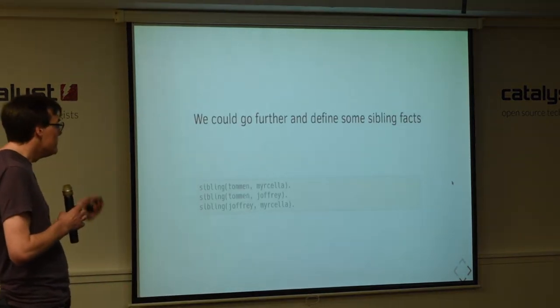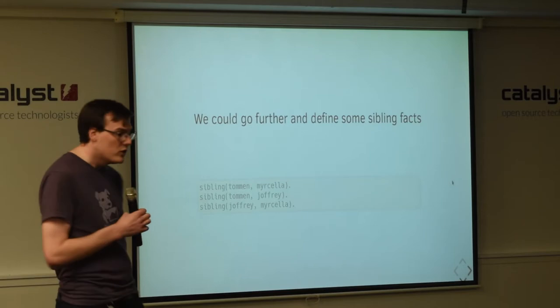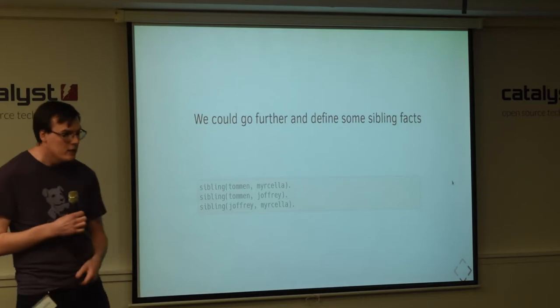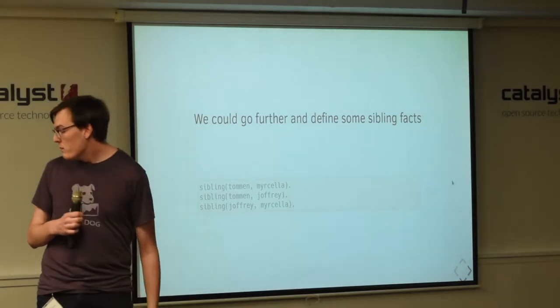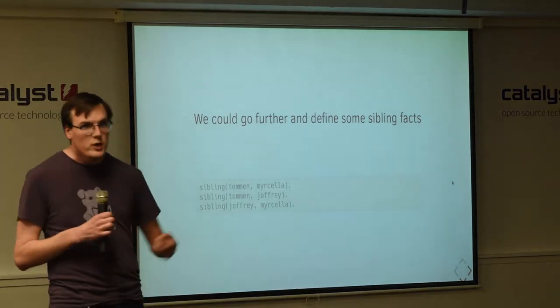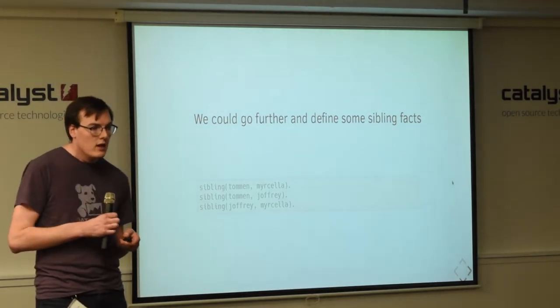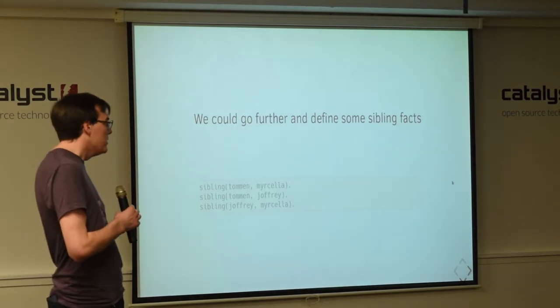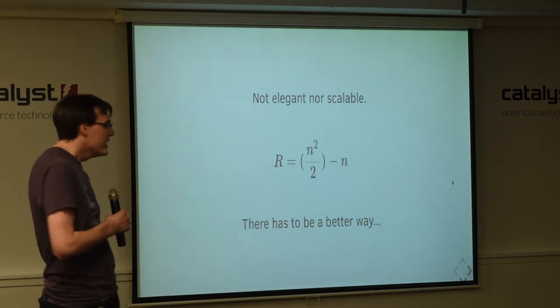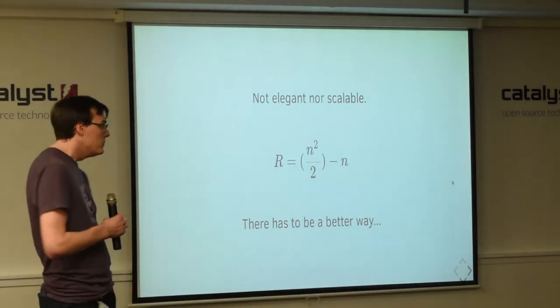So, we could go further and define some sibling facts. Tommen is Mozilla's sister. Tommen is Joffrey's sister. And Joffrey is Mozilla's, I keep saying sister, but I mean sibling. But that seems inelegant, really. So, if you had a lot more children or you were trying to model something in the real world that wasn't children, something where there's lots and lots of different relationships you want to define, then it gets really big, really fast, and you end up writing a lot of code. So, we need to find a better way to represent this.